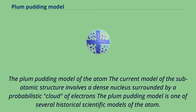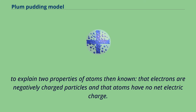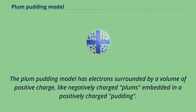The modern model of the subatomic structure involves a dense nucleus surrounded by a probabilistic cloud of electrons. The Plum-Pudding model is one of several historical scientific models of the atom, first proposed by J.J. Thomson in 1904, soon after the discovery of the electron but before the discovery of the atomic nucleus. The model tried to explain that electrons are negatively charged particles and that atoms have no net electric charge. The Plum-Pudding model has electrons surrounded by a volume of positive charge, like negatively charged plums embedded in a positively charged pudding.